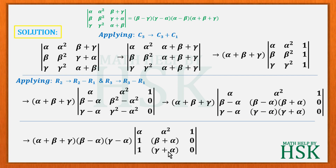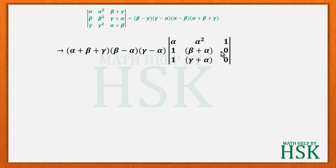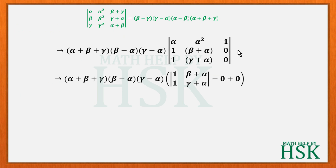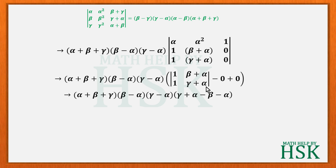Expanding this determinant along the third column, we get 1 times the 2×2 minor: (β+α)(1) − (γ+α)(1), which simplifies to β+α − γ−α. The α terms cancel, giving β − γ, i.e., γ−α cancels leaving γ minus β.